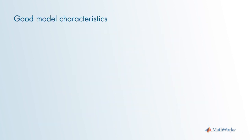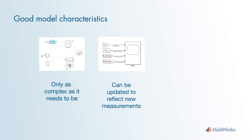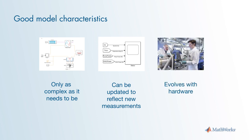The characteristics of a good model are: first, it's only as complex as it needs to be. A model should match empirical data over your use cases with a minimal amount of detail, which makes model maintenance easier. More importantly, it can be updated to reflect new measurements or architectural changes. In the model-based design paradigm, models evolve with the hardware in an incremental back-and-forth fashion.